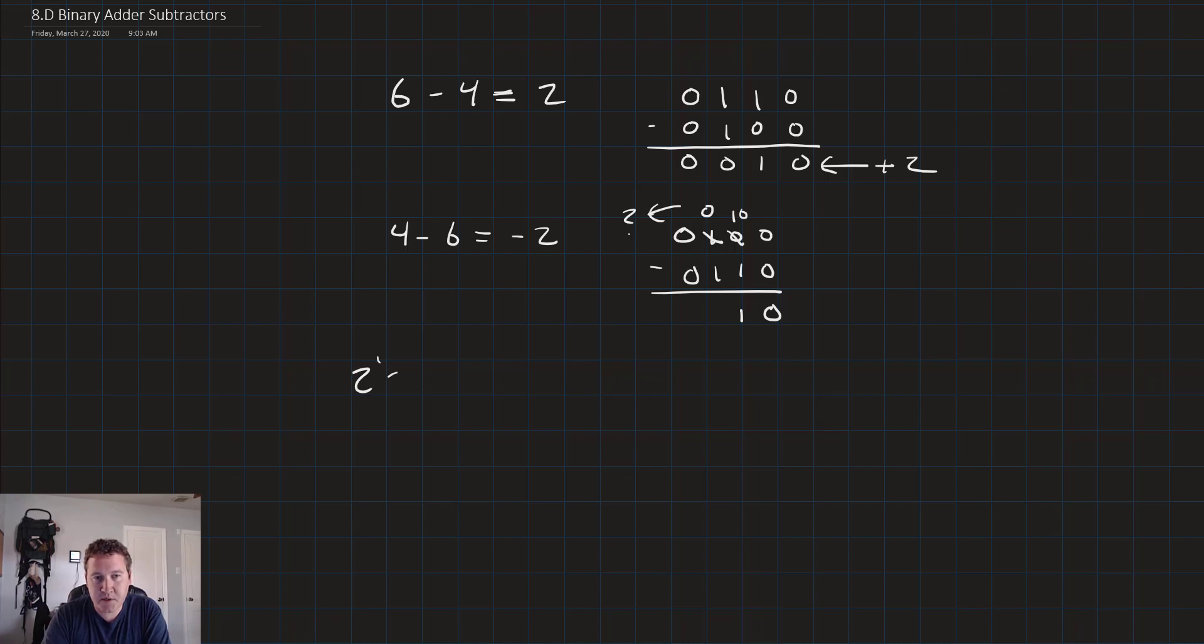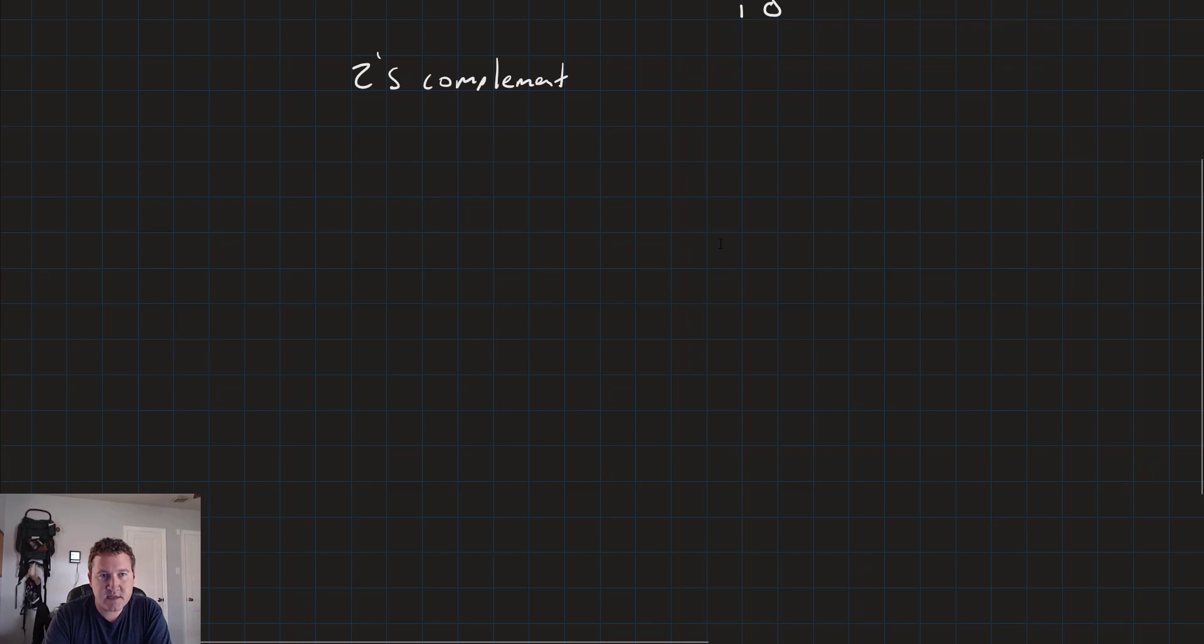So we need a different system in order to do this. This is where the 2's complement numbers come in. By using 2's complement, what we'll do instead, instead of doing 4 minus 6 equals negative 2, we'll instead do 4 plus negative 6 is equal to negative 2. And we'll do that by converting the 6 into negative 6 using 2's complement representation.